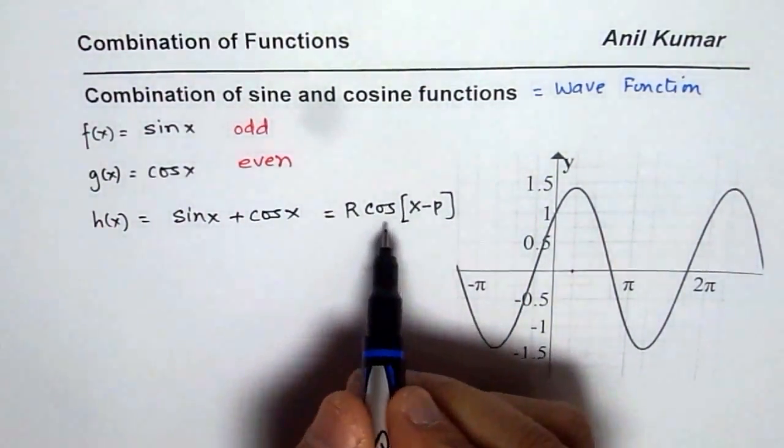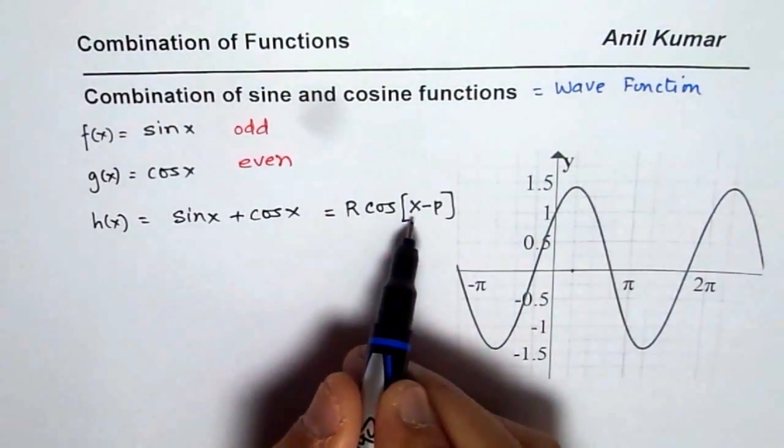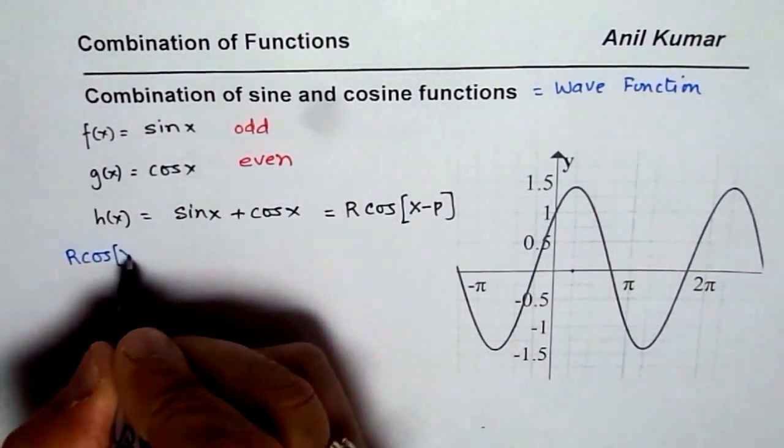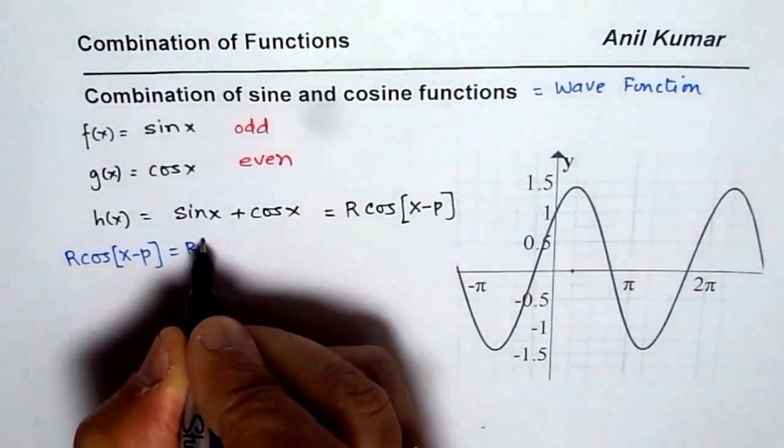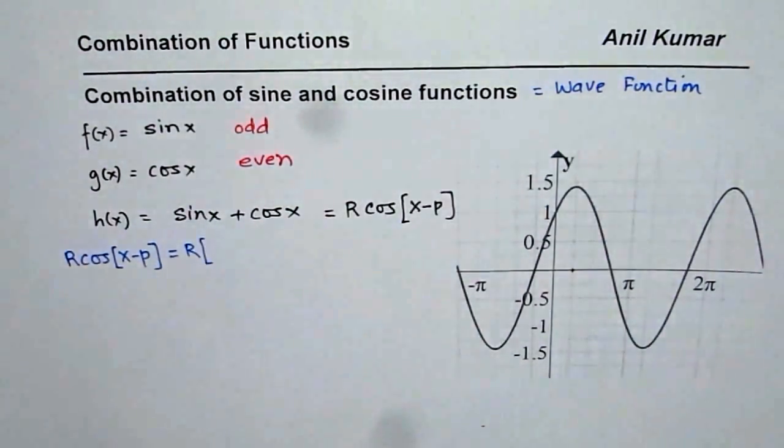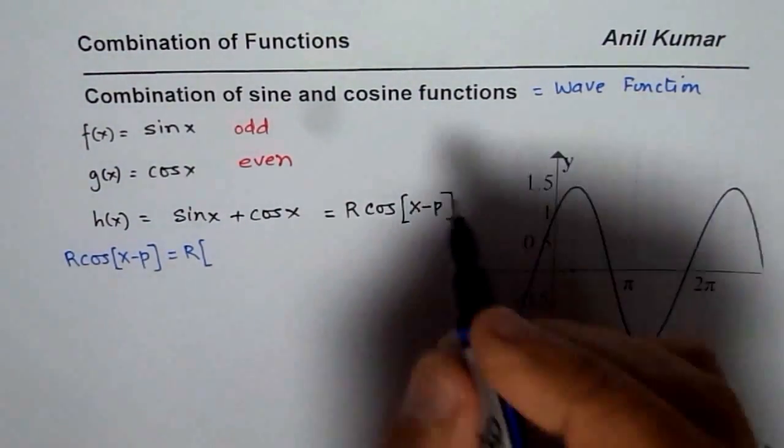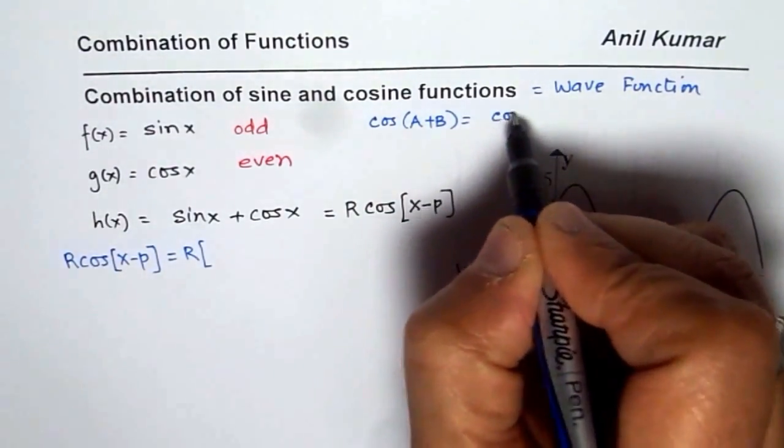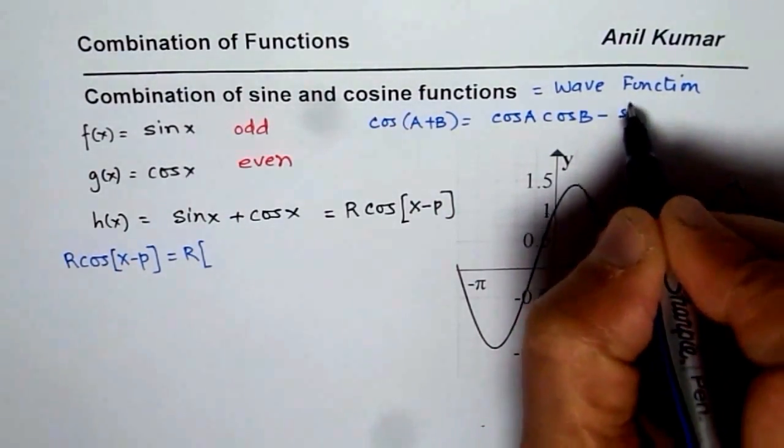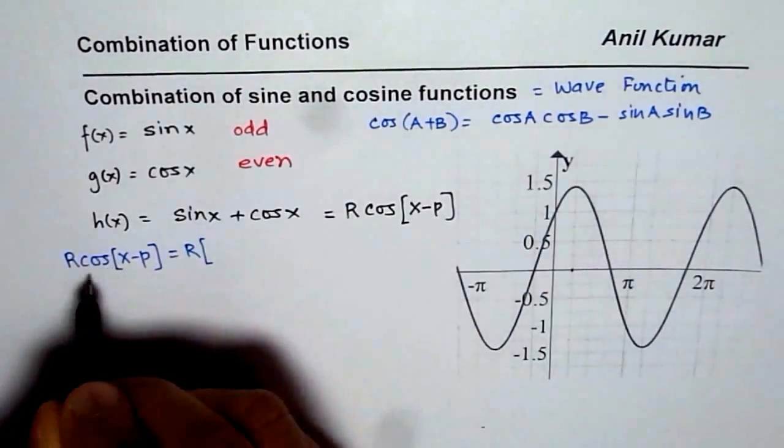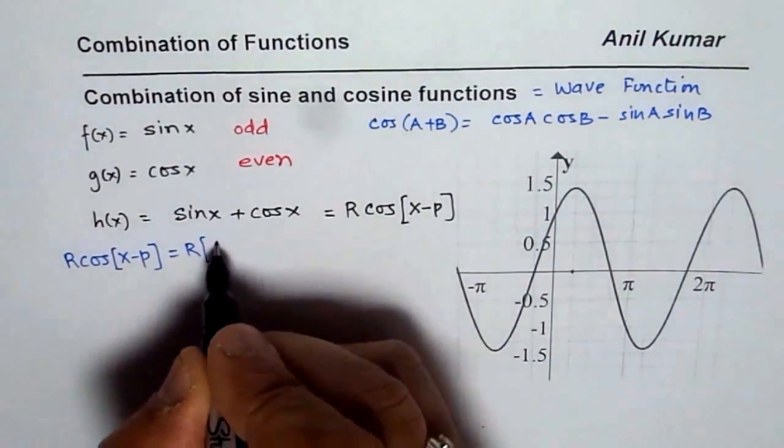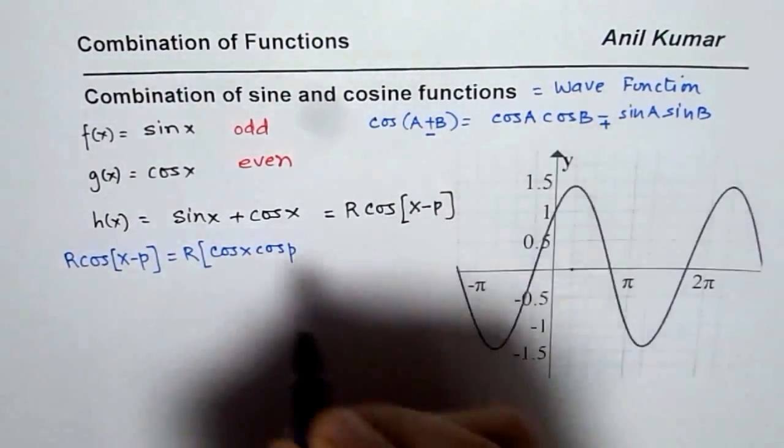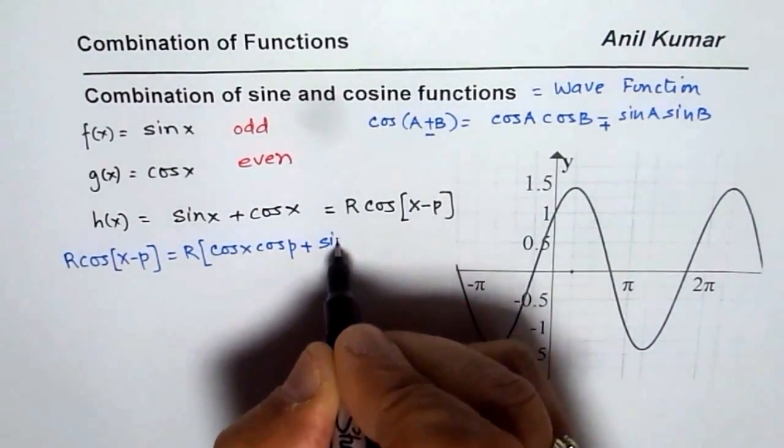Now, to find their relation, how can we write sine x plus cos x as R times cos(x-p)? Let us expand this particular function, which is R cos(x-p), where R is the amplitude. So we will use the combination formula. You remember cos(a+b) formula? Let me write here. Cos(a+b) equals cos a cos b minus sine a sine b. So we will use this formula to expand cos(x-p). So we get cos x cos p. Since it is minus, let me write. For minus, it is plus. So we write here plus sine x sine p.